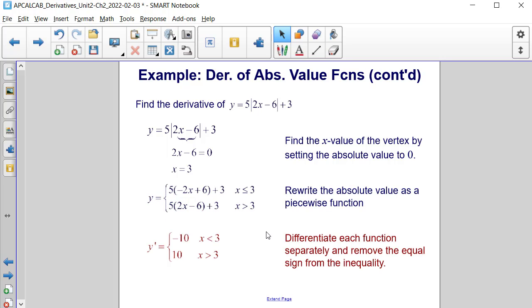Next, we differentiate each function separately. So our first function, if we were to distribute and combine like terms, we get negative 10x plus 30 plus 3, so that's plus 33.